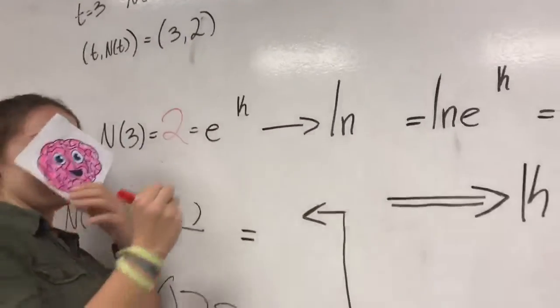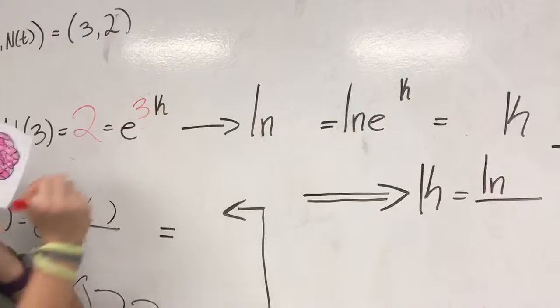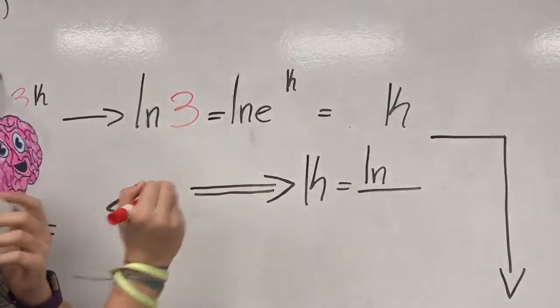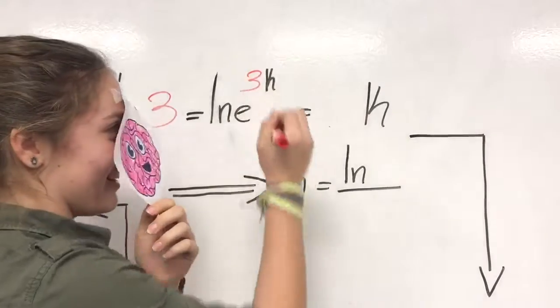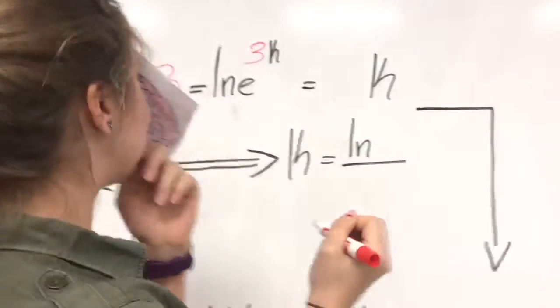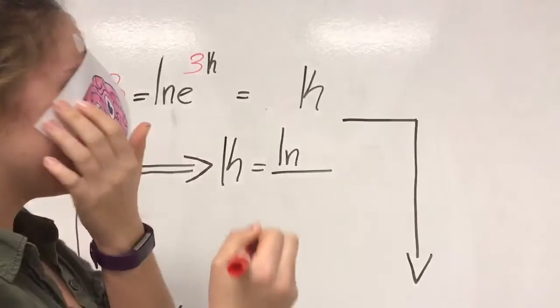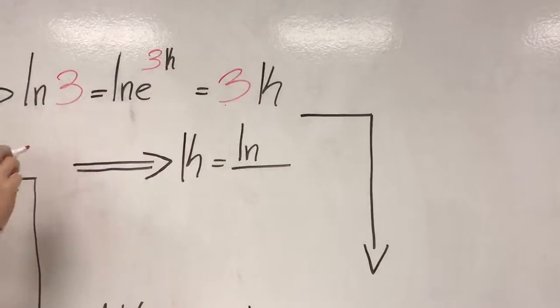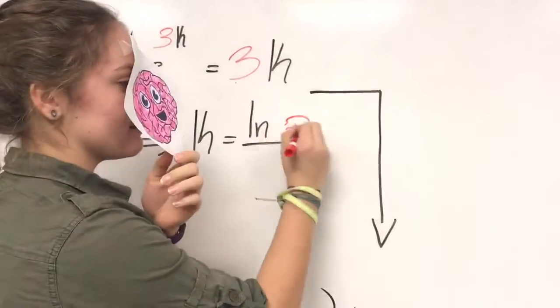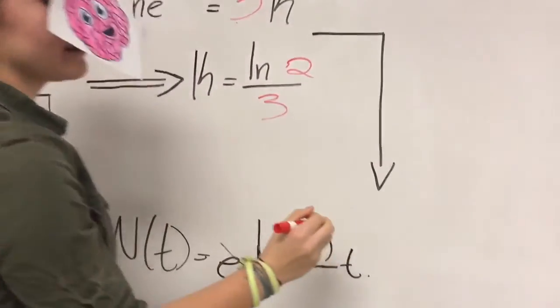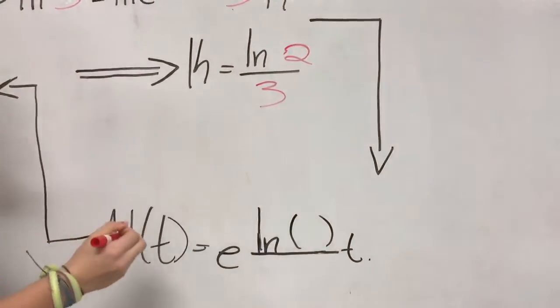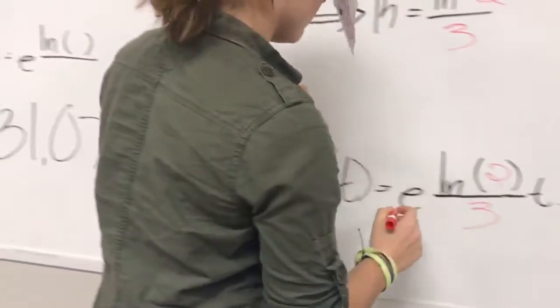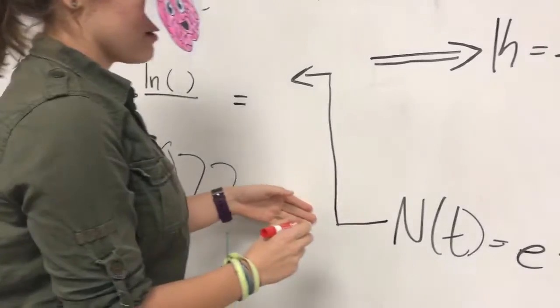We know the factor that when t equals 3, n times 3 equals 2, the population has doubled, substituting the point t and t equals 3, 2 into 2. Now we can solve for the k in 3 by undoing the exponential using the natural logarithm. Using this value of k, our model in 2 becomes. Now that we have our model, we need to find the population size after 51 hours, substituting t equals 51 into 4 yields.